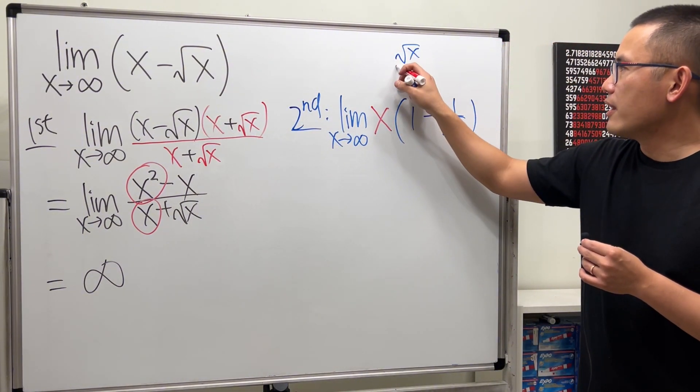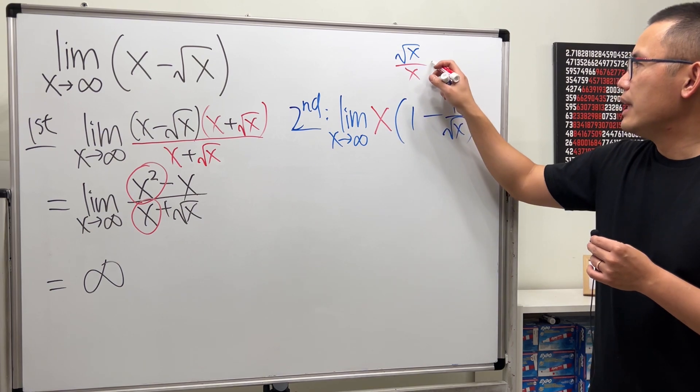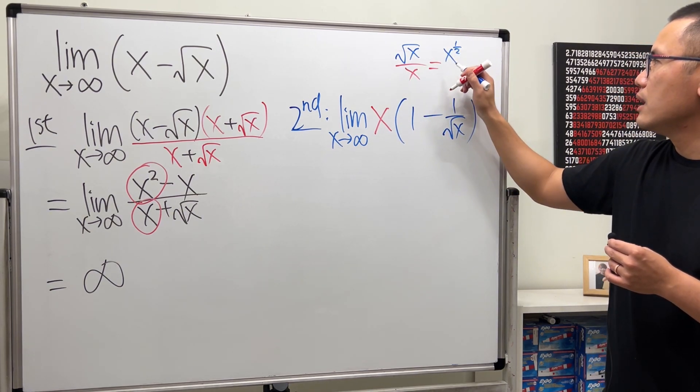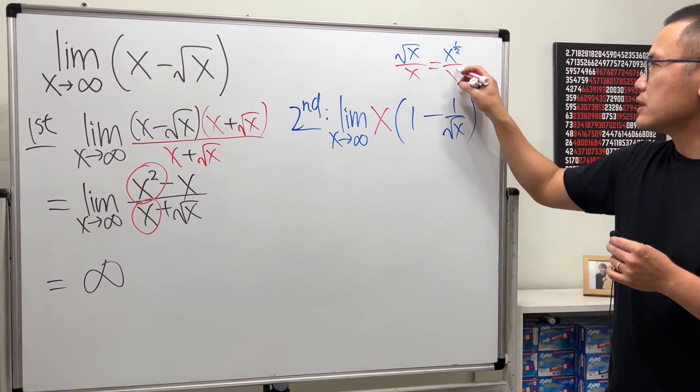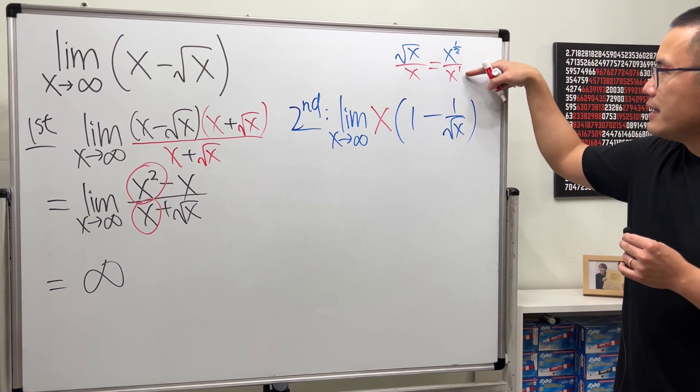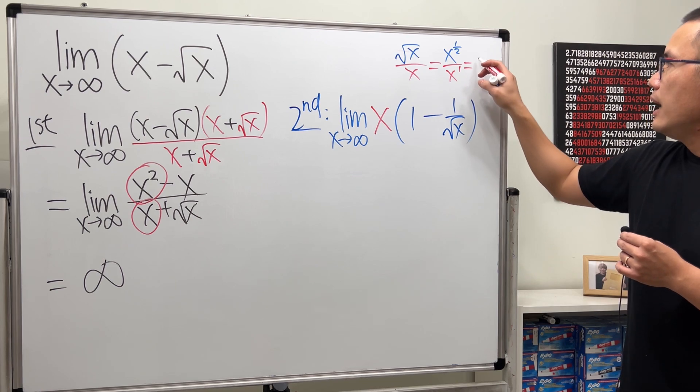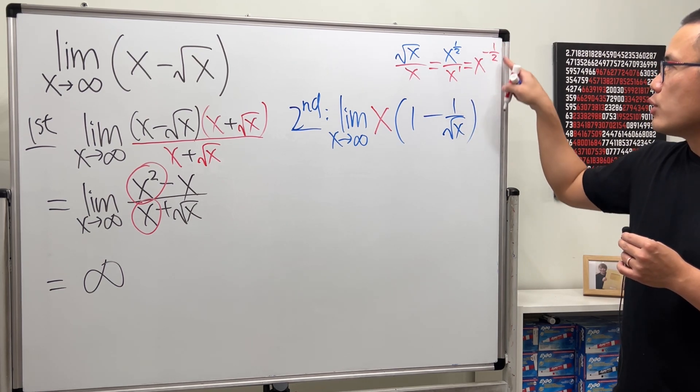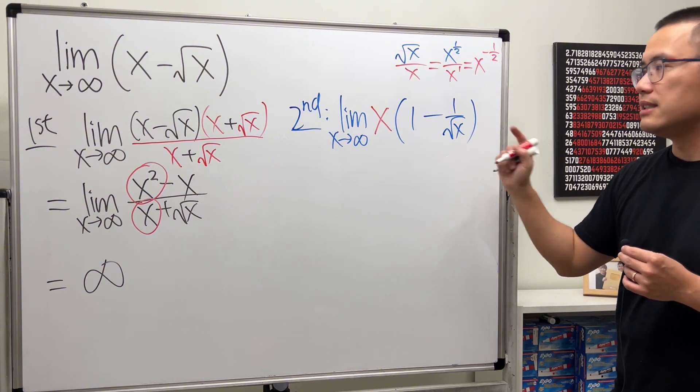The reason we get this is because we take this square root of x and divide it by the thing that we factored out. You can reduce this: this is x to the one half power and this is x to the first power on the bottom, one half minus one is the same as x to the negative one half power.